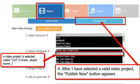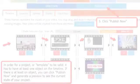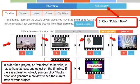Once you have selected a valid template or project, you're going to see that Publish Now button come up. In order for that to happen you have to have a valid project, which means you have to have at least one object on your timeline — then that Publish Now button will appear.